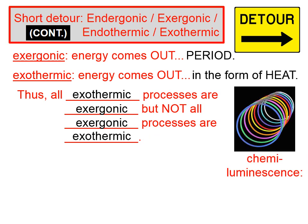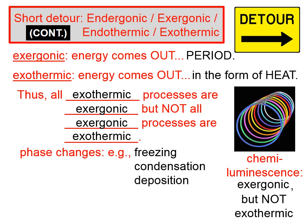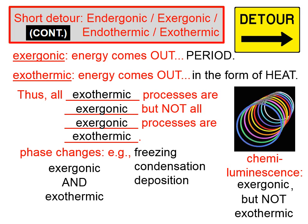For example, chemiluminescence — does energy come out? It definitely does, but it doesn't come out in the form of heat; it comes out in the form of light. Chemiluminescence is an exergonic process, but it's not exothermic. On the other hand, phase changes such as freezing, condensation, and deposition require energy to come out, and it comes out in the form of heat. Therefore, phase changes like freezing, condensation, and deposition are both exergonic and exothermic.